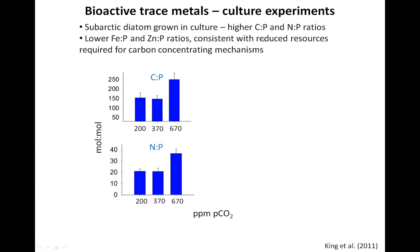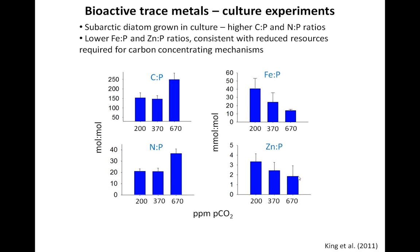I wanted to show the only example of work demonstrating an OA-related change in bioactive trace metal requirements. With a sub-Arctic diatom grown in culture, we see an increase in carbon-to-phosphorus and nitrogen-to-phosphorus ratios at different CO2 concentrations, and also a decline in iron-to-phosphorus and zinc-to-phosphorus ratios. This is consistent with the hypothesis that at higher CO2, phytoplankton rely less on carbon-concentrating mechanisms — which are energy- and iron-dependent — and require fewer zinc-dependent enzymes. Interestingly, growth rates and primary production increased at higher CO2, so the use efficiencies of iron and zinc are much higher — you need less to grow, and you can grow more at high CO2.